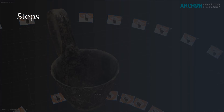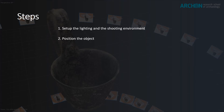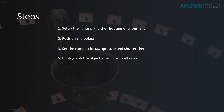Each time you do a photogrammetry project in the field you go through the following steps. First you set up the lighting and the shooting environment. Then you position the object inside the environment. Then you set the camera, the focus, aperture and shutter time. Then you photograph the object systematically around from all sides.